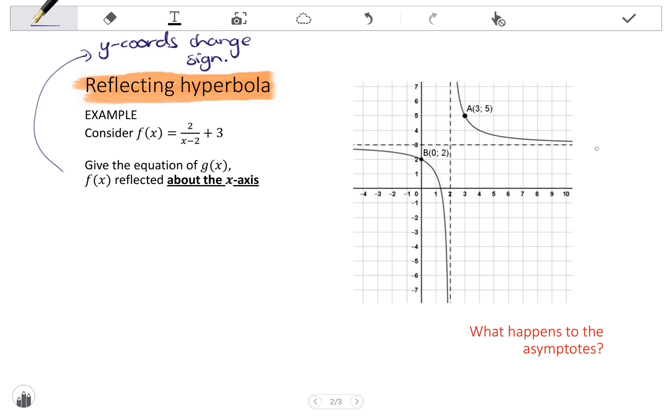If we look at the graph, what that means is that the horizontal asymptote is going to change. So, where my horizontal asymptote equation is currently y equals 3, it will go to y equals negative 3. Looking at the coordinates, I have the coordinate A with 3, 5, and that point will go to 3, negative 5. And then I have the point B with the coordinate 0, 2, and if the y-coordinate changes, this will go to 0, negative 2. But the vertical asymptote remains unchanged because it is represented with an x.